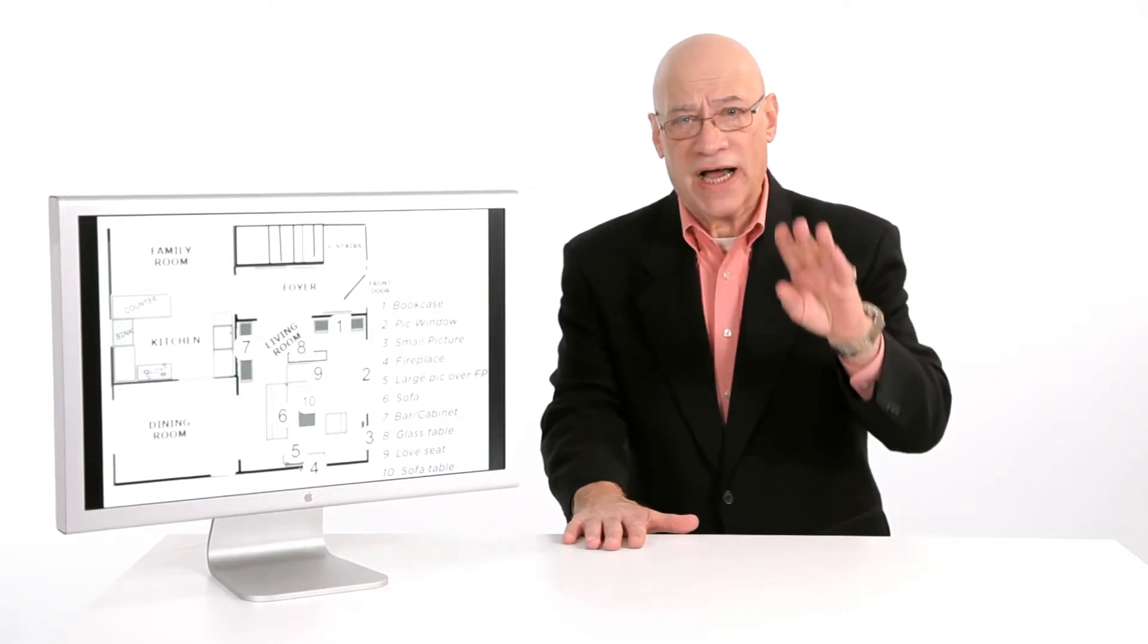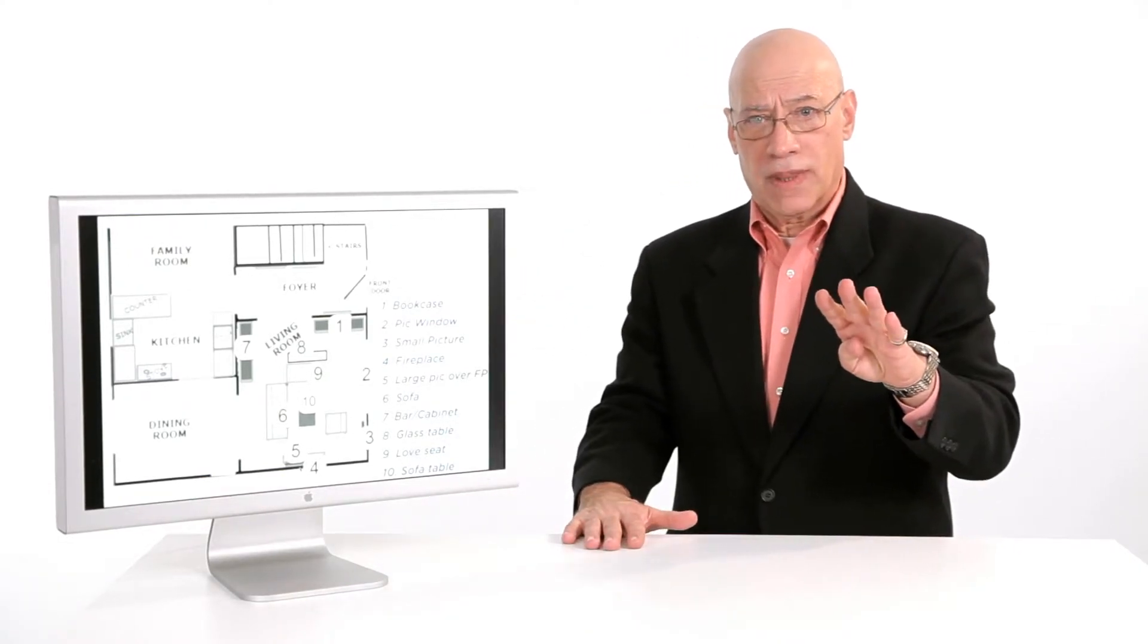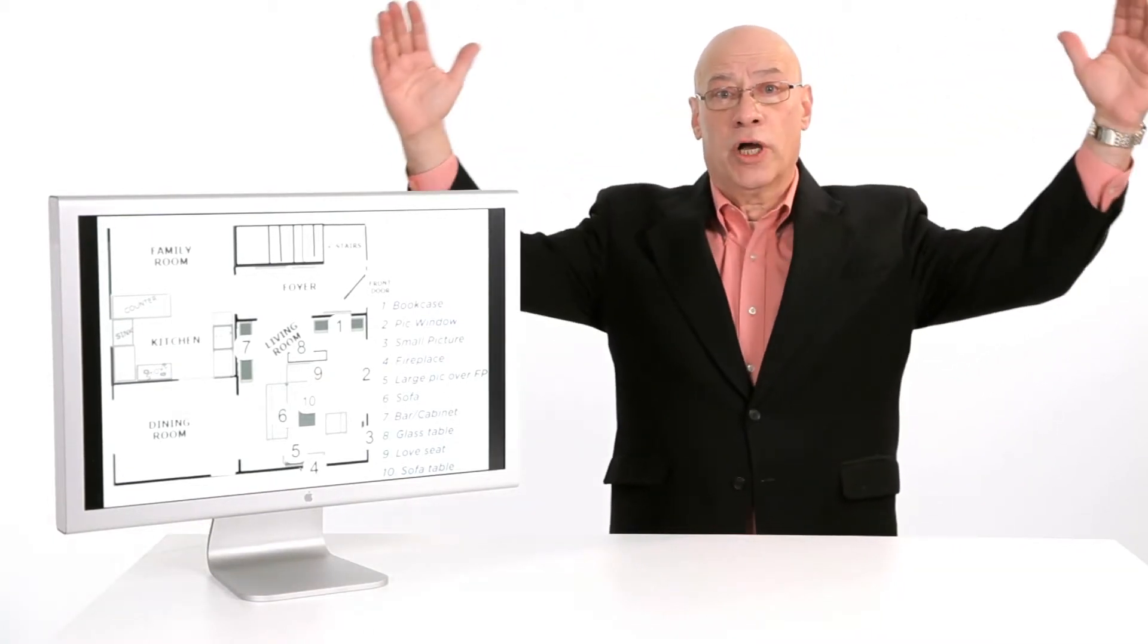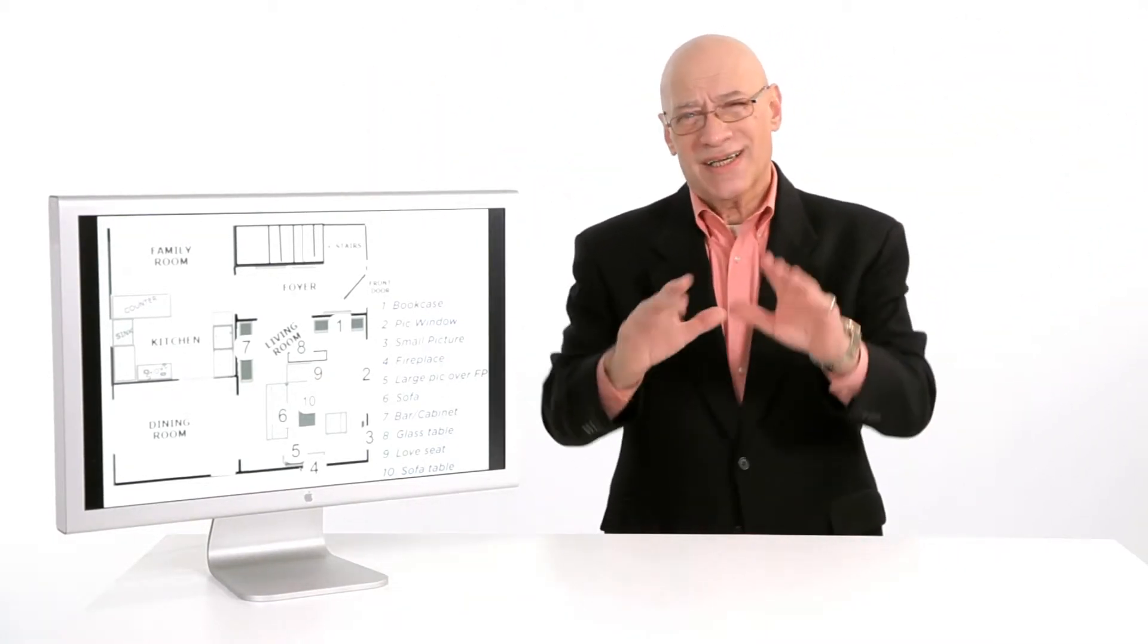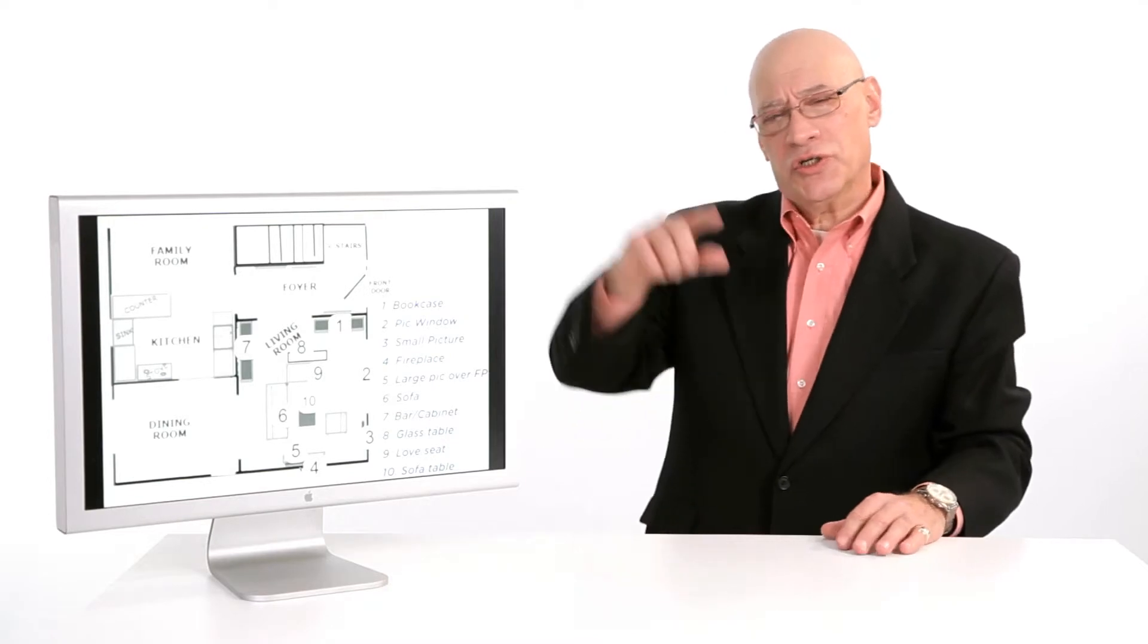Number four is the fireplace. Number five is a large oil painting over the fireplace. Let's stop there just for demonstration. You can see that I go around the room, to the sofa, to a bar cabinet, around to a small glass table, to a small couch, a small love seat, and then to a larger table. Whatever you use in your room is going to be fine. Use it regularly.